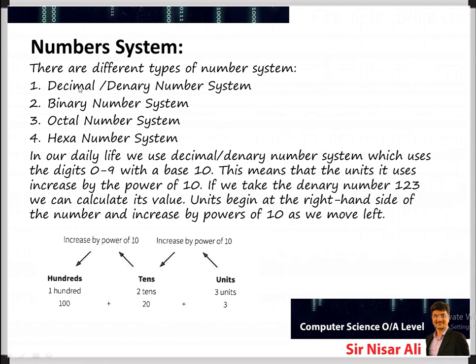We also need to understand that there are different types of number systems used in mathematics. These are: the decimal number system, the binary number system, the octal number system, and the hexadecimal number system. These are four types, and your syllabus for this chapter covers all four of these in detail.